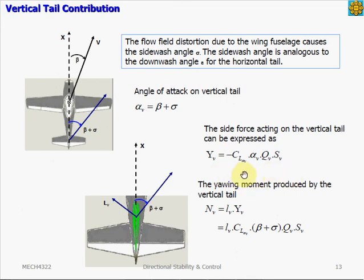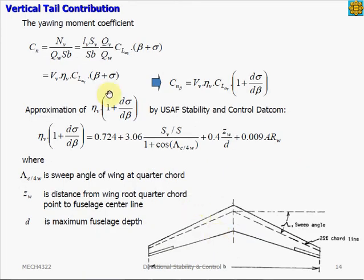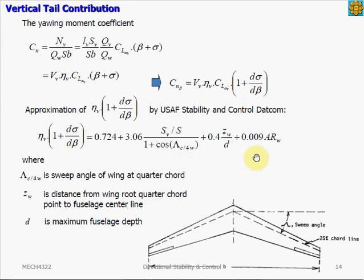The side force is multiplied by the moment arm of the vertical tail. In this equation, q is the dynamic pressure, S is the surface area of the vertical tail, and l is the arm length from the center of gravity to the vertical tail. We then convert the moment equation to a dimensionless yawing moment coefficient equation. The side wash parameter can be found through an empirical equation, and it is a function of the vertical tail's geometry.